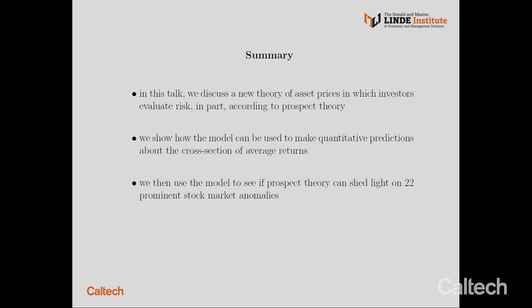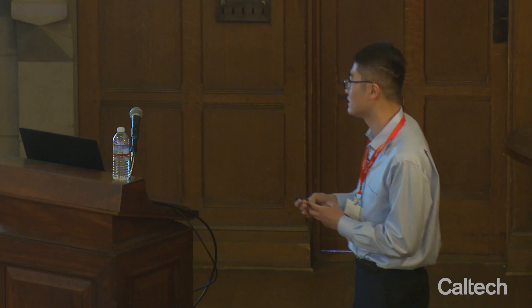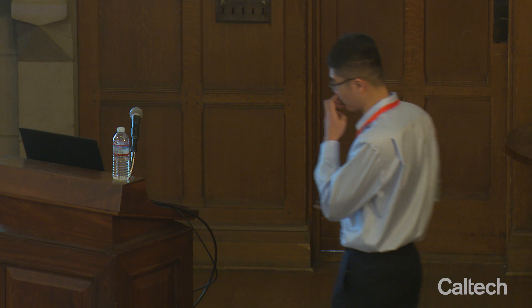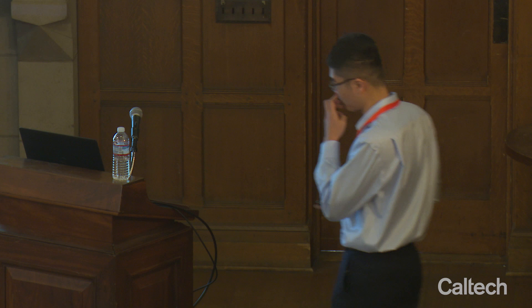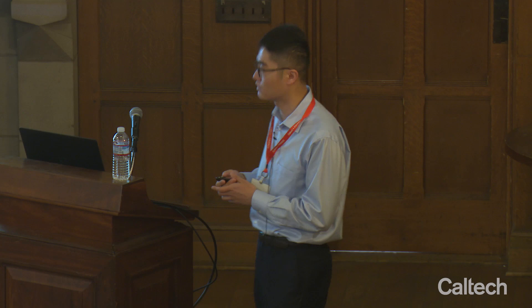For the rest of the talk, I will present some new joint work with Nick Barberis from Yale and Bao Lian Wang from the University of Florida. In this paper, we develop a new theory of asset prices in which investors evaluate risk at least in part according to prospect theory. We show how the model can be used to make quantitative predictions about the average return on any risky asset and hence about the cross-section. We find that the model is actually quite helpful for thinking about a majority of the 22 anomalies that we considered.